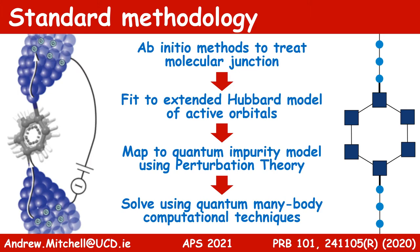The standard methodology typically involves using some ab initio methods for the molecule and a few hybridizing orbitals at the lead, and fitting parameters to an extended Hubbard model of active orbitals. Then, using perturbation theory to map to an effective quantum impurity model — in this context, this mapping is called a Schrieffer-Wolf transformation. This model can then be solved using the numerical renormalization group or some other numerical impurity solver.